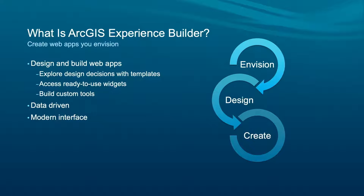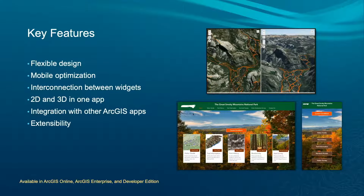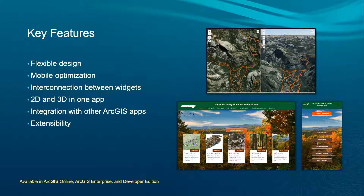Experience Builder uses the latest web technology so apps look modern and perform better. Key features include flexible design to create your own blueprint, mobile optimization to configure apps on desktop, tablet, and mobile differently using one URL, and widget communication where widgets can communicate with each other. 2D and 3D data work seamlessly in one app — widgets are agnostic, so they don't care if the feature layer is in a 2D map or 3D web scene.